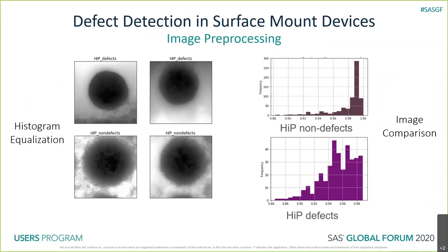We also looked at image comparison. You have a bunch of HIP non-defects representing the non-defective samples. When you do an image comparison using SAS, it returns a self-similarity index — a value ranging from 0 to 1, where 1 means the images are totally identical. For non-defects, the spread in the self-similarity index is very close to 1 with a spike near number 1. But when you do the same with the HIP defects, there is a bigger spread in this self-similarity index. These initial tests confirmed that there are inherent differences in the pixel information of the images.